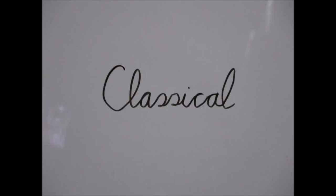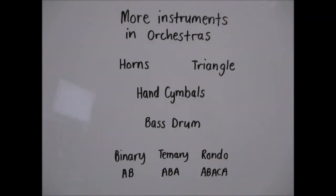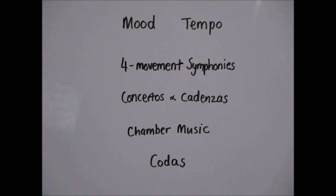Classical. The classical period lasted from around 1750 to 1820, that's the late 18th to early 19th century. Popular classical composers include Haydn and Mozart. Classical compositions use Alberti bass and are in favour of instrumental music. During the classical period, composers added more instruments to the orchestras: horns, triangle, hand cymbals and the bass drum. We also have the forms of binary AB, ternary ABA and rondo ABACA. Classical music focused on mood and tempo. We saw the invention of four movement symphonies, concertos and cadenzas for showing off, chamber music and codas for ending a piece. Here are some examples.